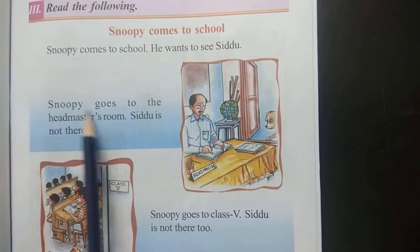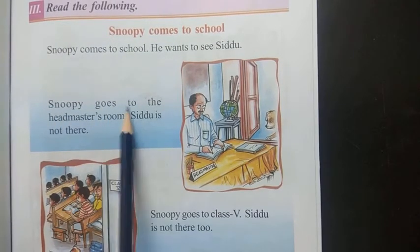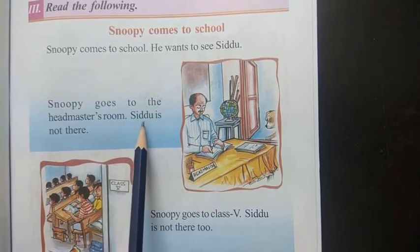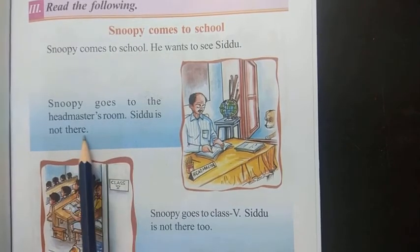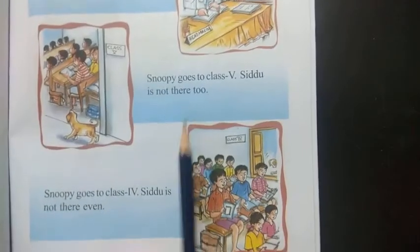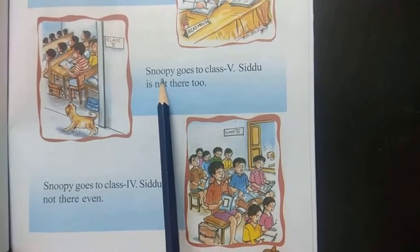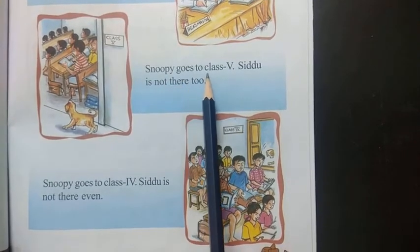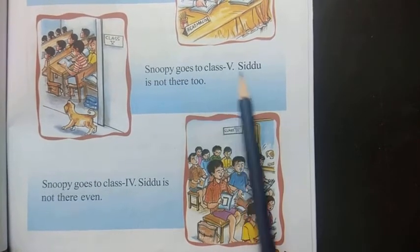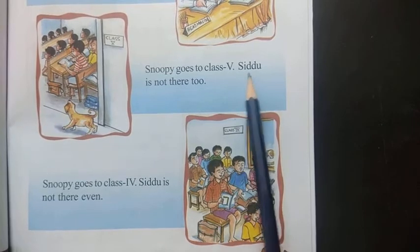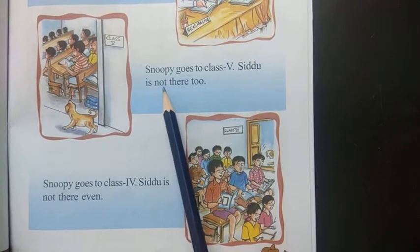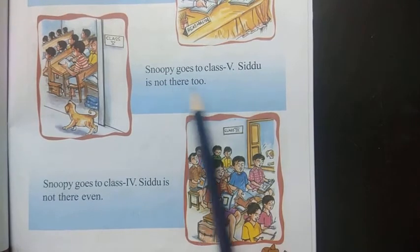Snoopy goes to the headmaster's room. Siddhu is not there. Snoopy goes to class 5. Siddhu is not there too.